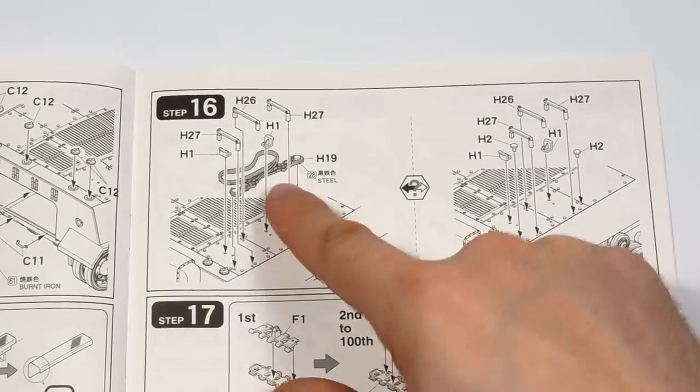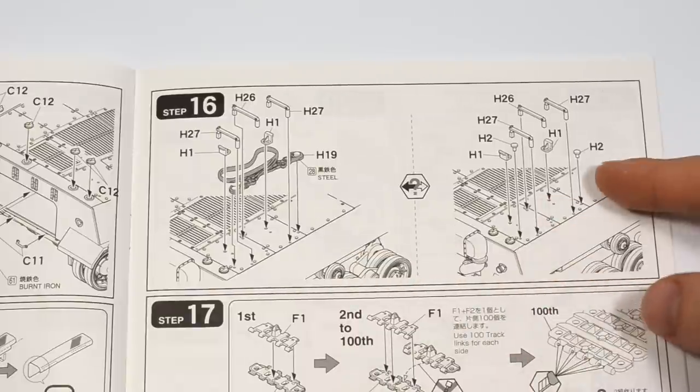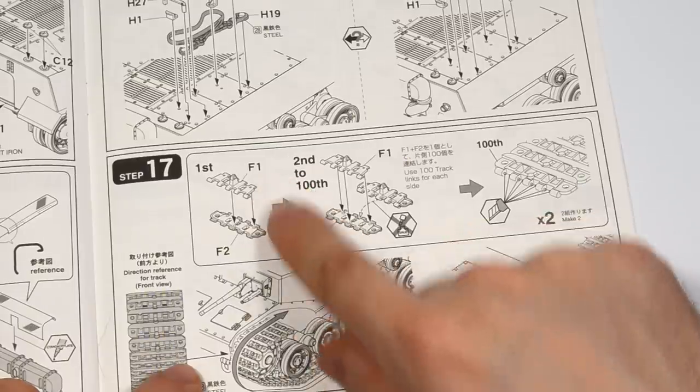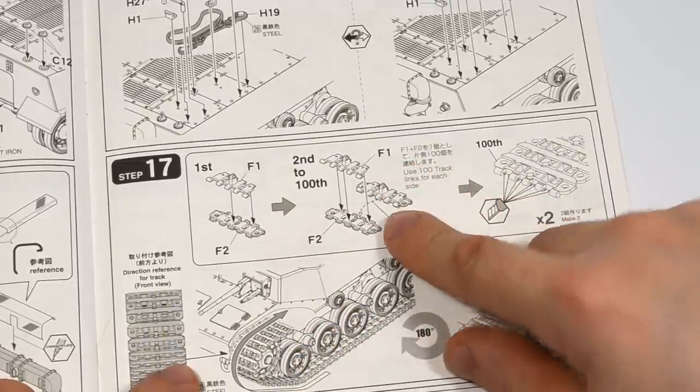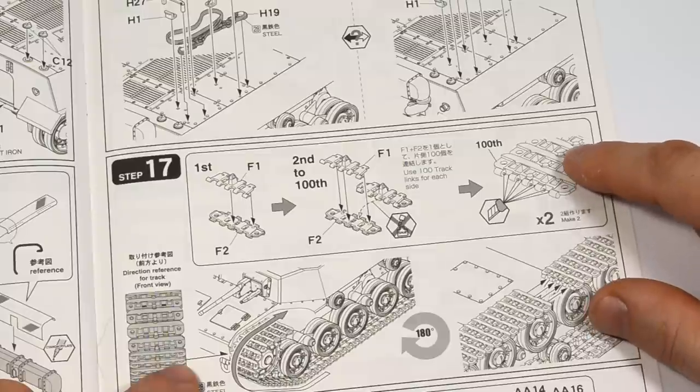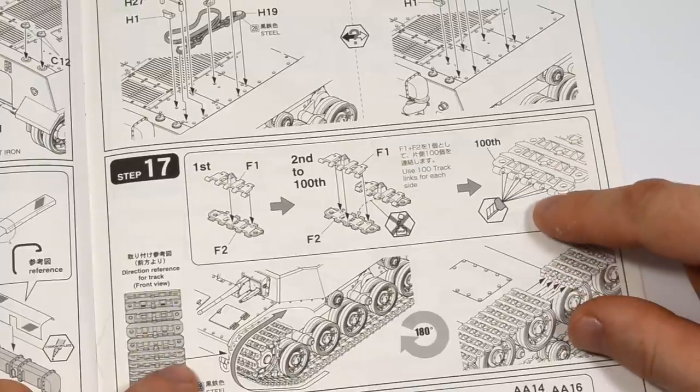You have an option to use the towing cable or you can build the model without it. And this is where we should assemble the tracks. 200 parts for one track run. I've seen worse. And I'm glad they aren't flexible rubber bands.